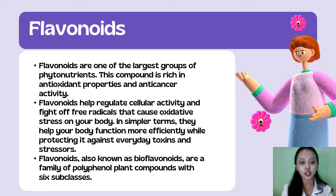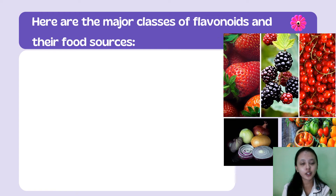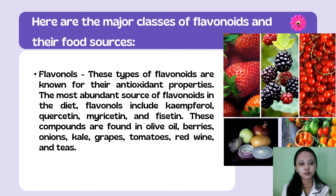Flavonoids, also known as bioflavonoids, are a family of polyphenol plant compounds with six subclasses. Here are the major classes of flavonoids and their food sources. Flavonols are known for their antioxidant properties and are the most abundant source of flavonoids in the diet. They include kaempferol, quercetin, myricetin, and fisetin. These compounds are found in olive oil, berries, onions, kale, grapes, tomatoes, red wine, and teas.